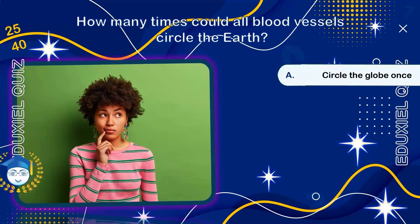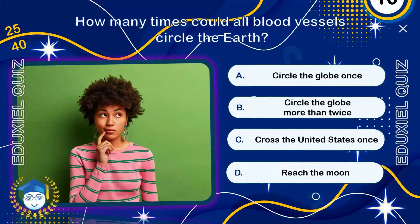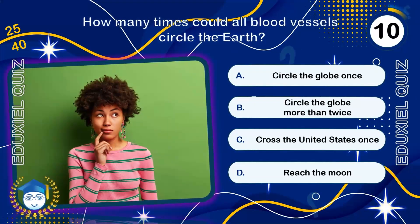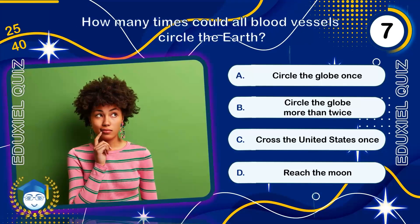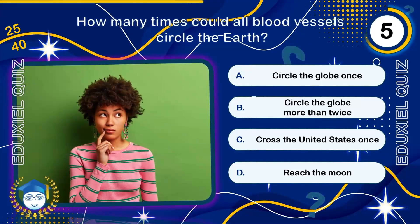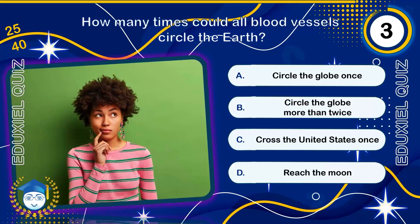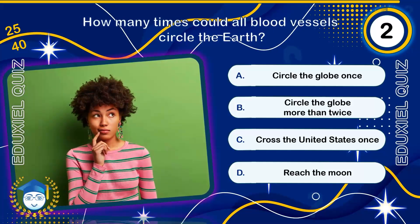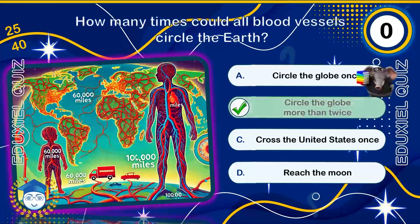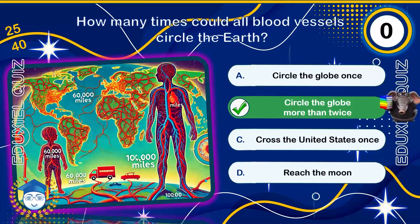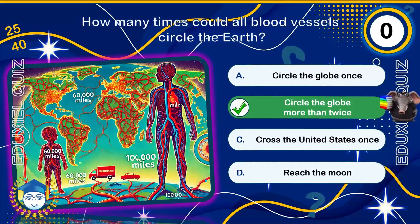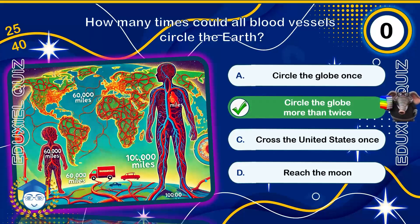How many times could all blood vessels circle the Earth? More than twice. The circulatory system's total length is estimated to be over 96,000 to 100,000 kilometers, approximately 60,000 miles.